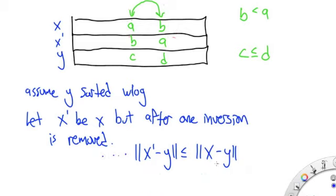So continuing this argument inductively, if we keep moving from the original x to a slightly more sorted x, to an even more sorted x, until we eventually get to a completely sorted x, that the difference between the sorted x and y is less than or equal to the distance between the original x and y.